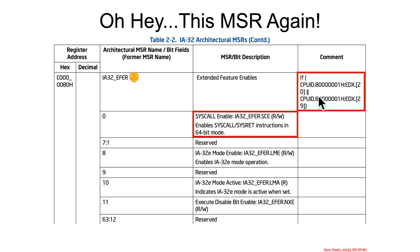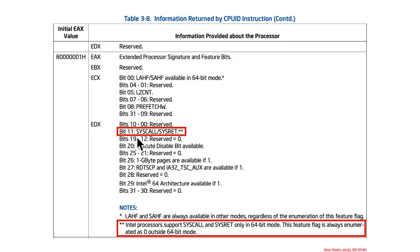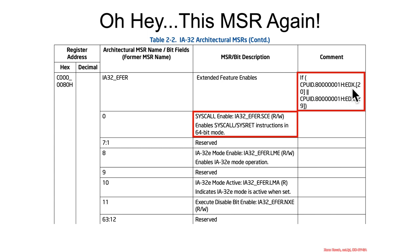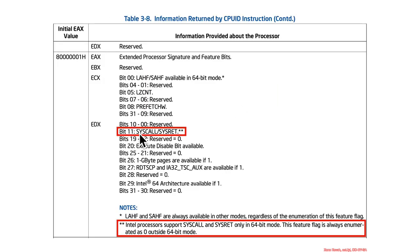Going back and checking what this said: bit 11 is the syscall capability of the processor. This is actually counterintuitive because bit 20 and bit 29 — which had to do with long mode enable and the NX enable respectively — are not what syscall is dependent on. Syscall is dependent upon bit 11. And here in the CPUID output you can see the mention that Intel processors support syscall and sysret only in 64-bit mode — basically saying they don't do syscall in 32-bit mode.